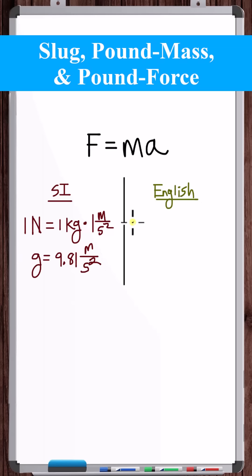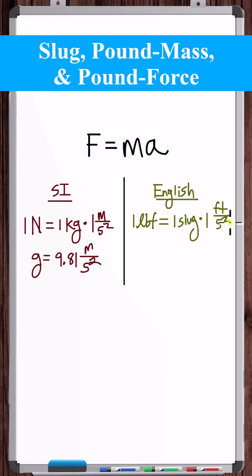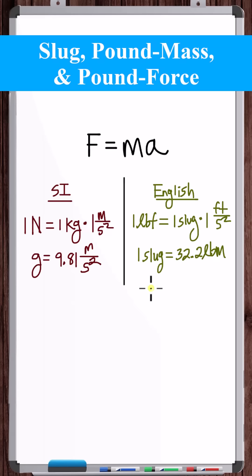In English units, 1 pound force is equal to 1 slug times 1 foot per second squared. Furthermore, 1 slug is equal to 32.2 pounds mass. And the acceleration due to gravity in English units is 32.2 feet per second squared.